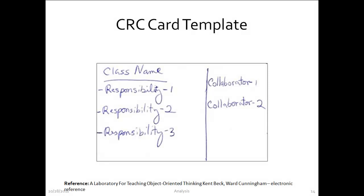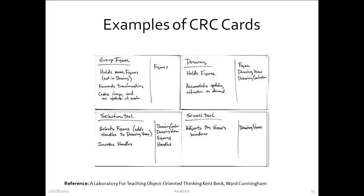CRC cards — Class Responsibility Collaborator cards — are nothing more than 4 by 6 index cards. One side shows the class name, responsibilities, and collaborators. Some techniques place collaborators on the other side. The idea is to capture objects and classes on these cards. CRC cards may be used for more than analysis; they can capture design as well. An example shows four CRC cards describing classes: group figure, drawing, scroll tool, and selection tool — likely capturing components of a user interface.